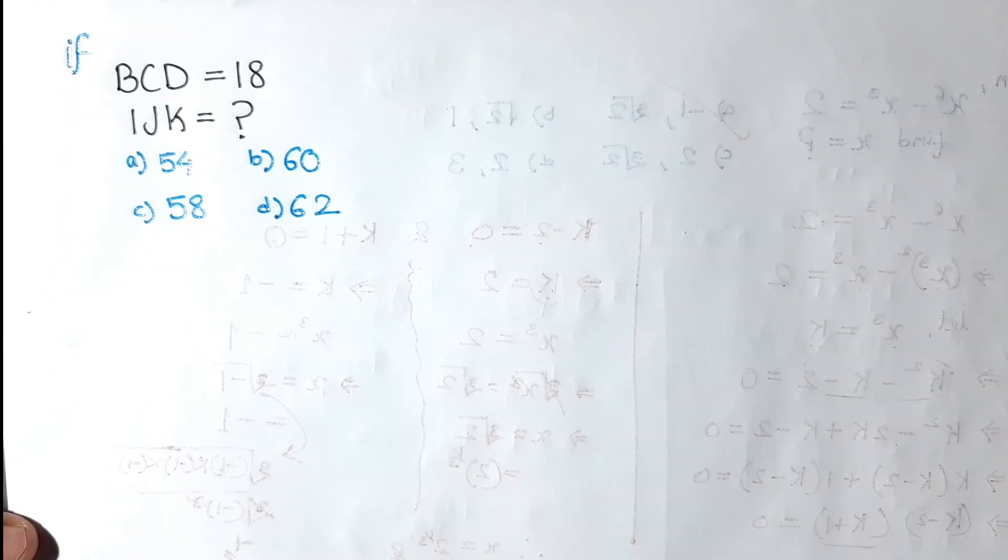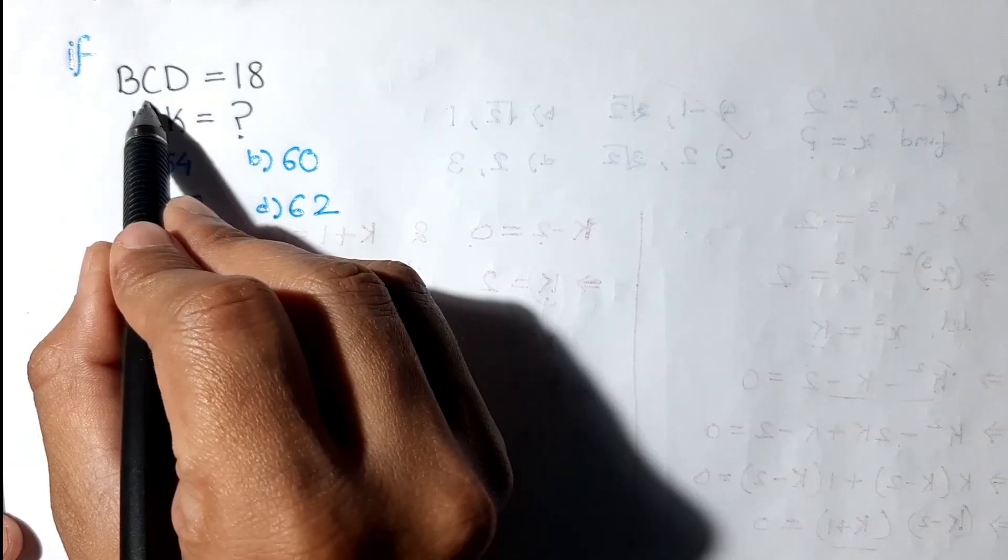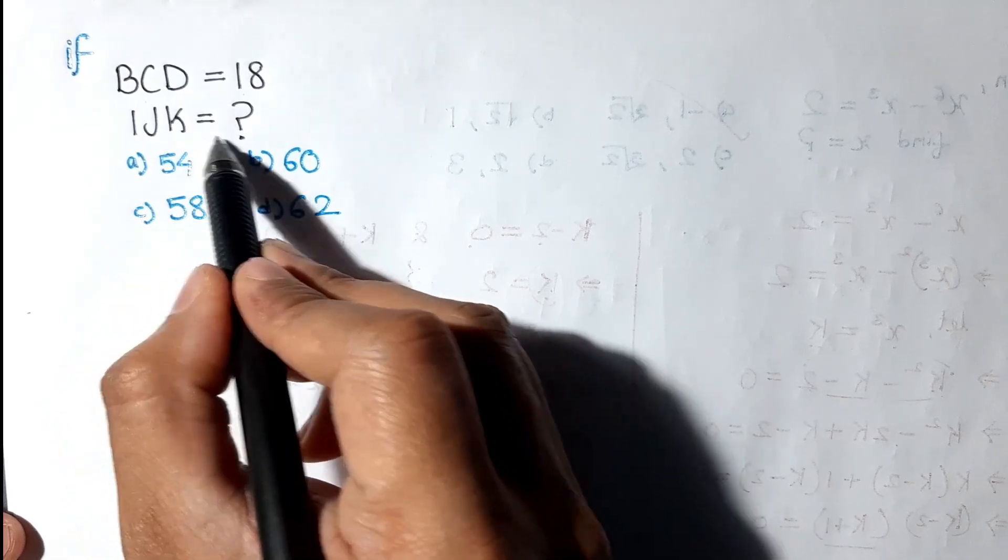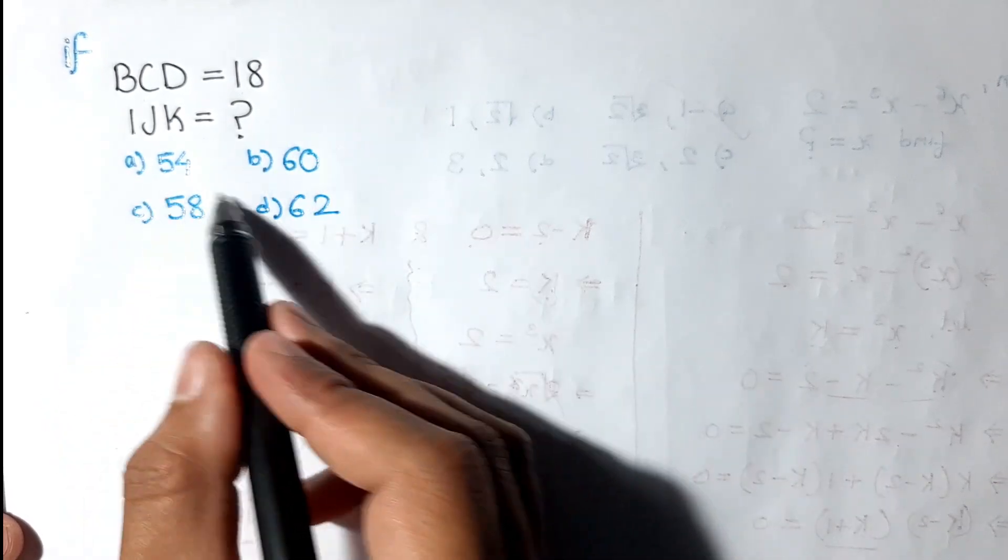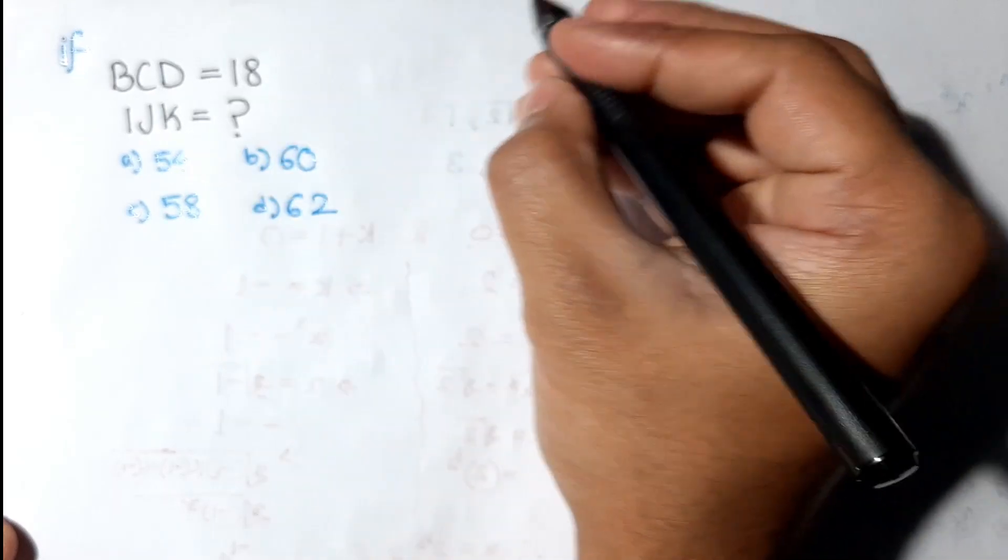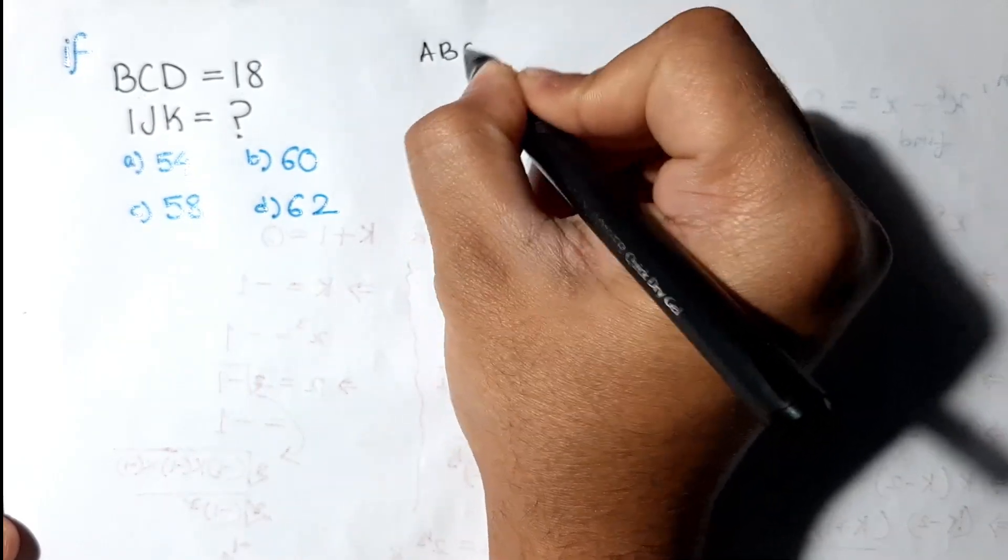Hello guys, welcome to my channel. Let's solve some reasoning problems. Given BCD equals 18 and IJK equals when, find out. These are the options. So first we'll check BCD.